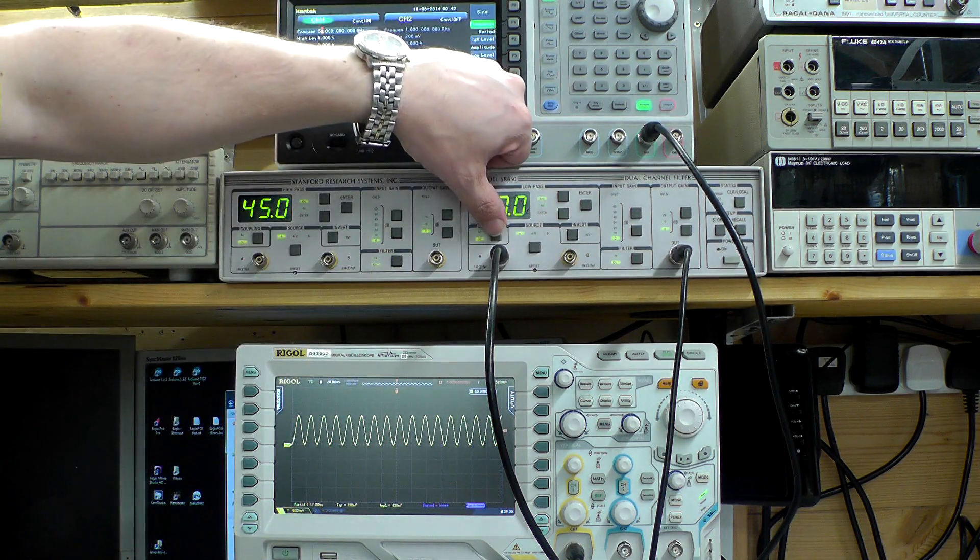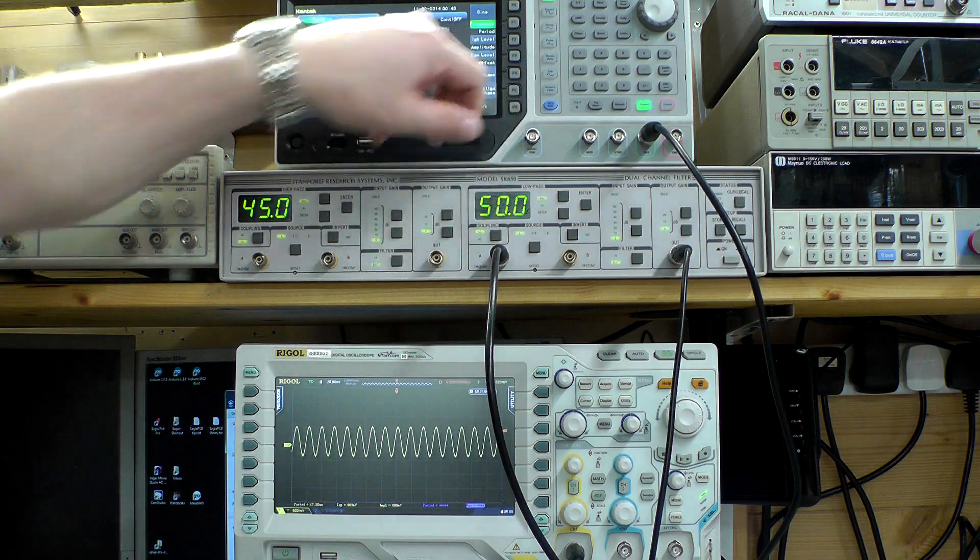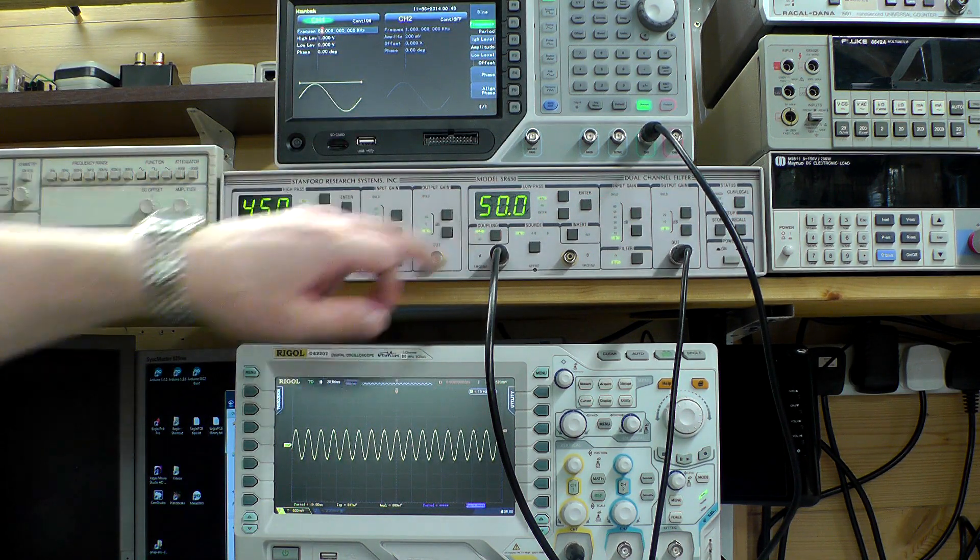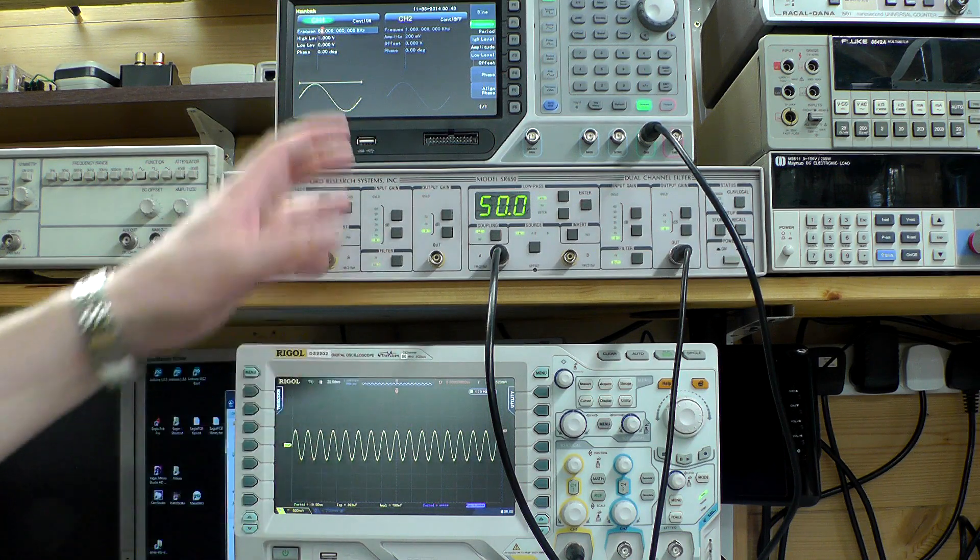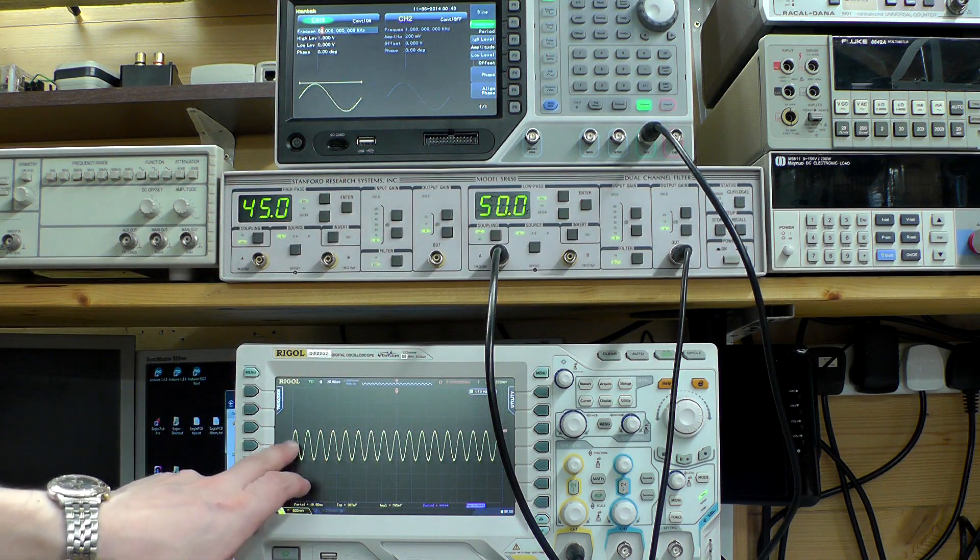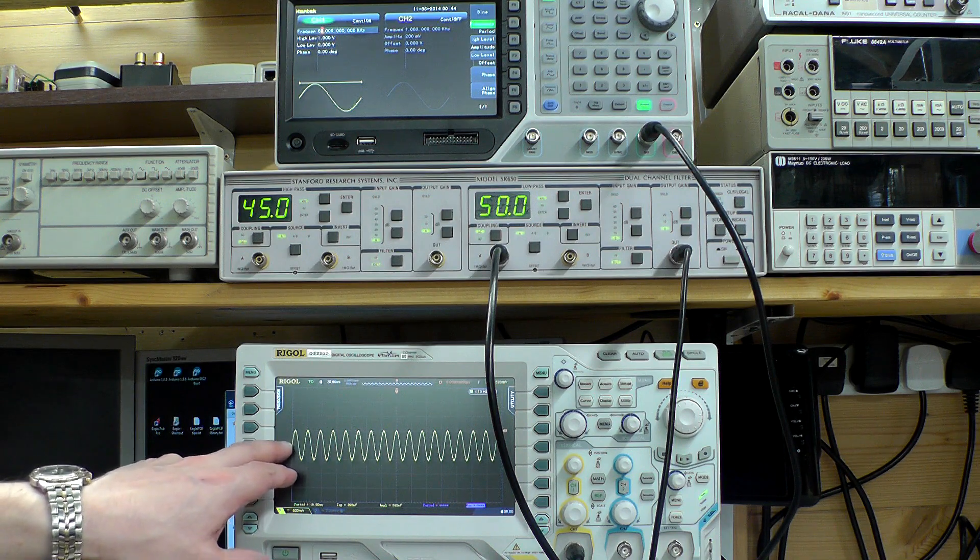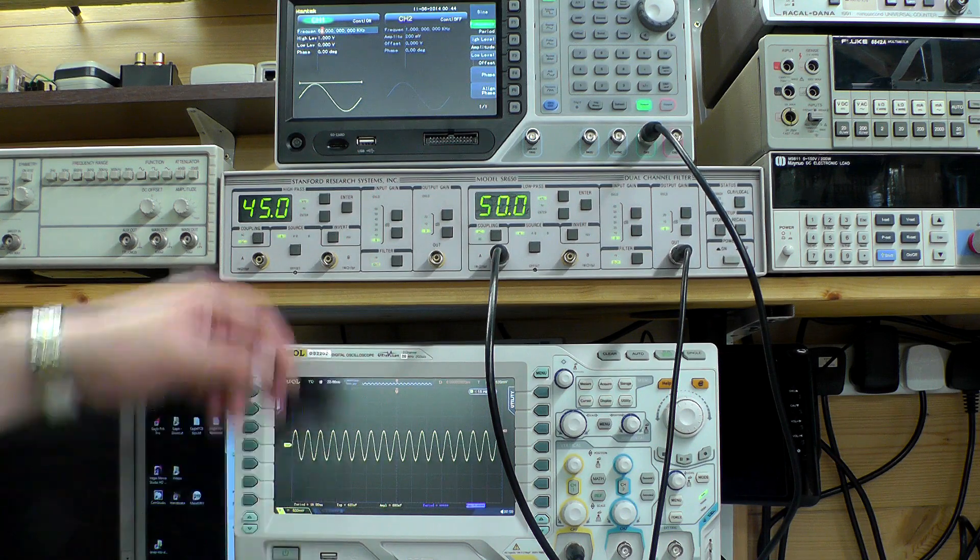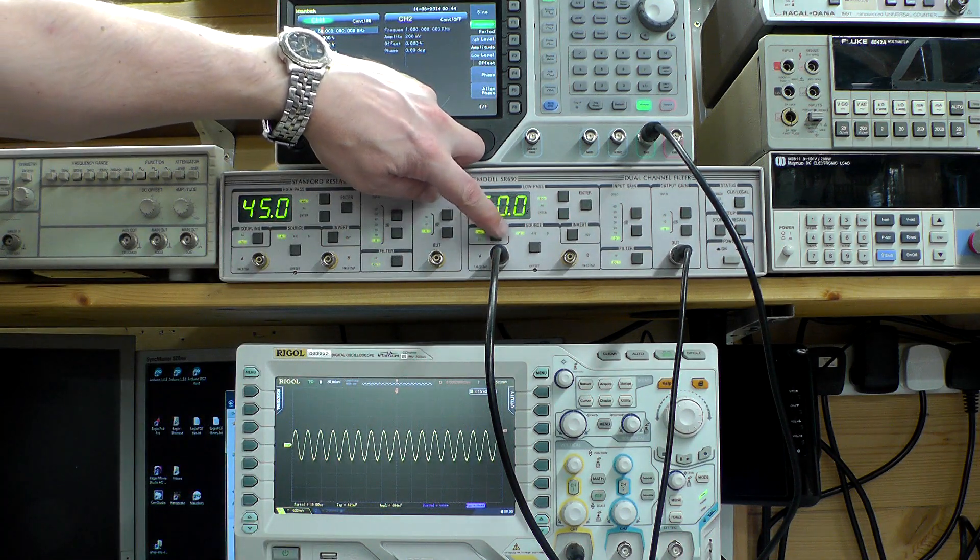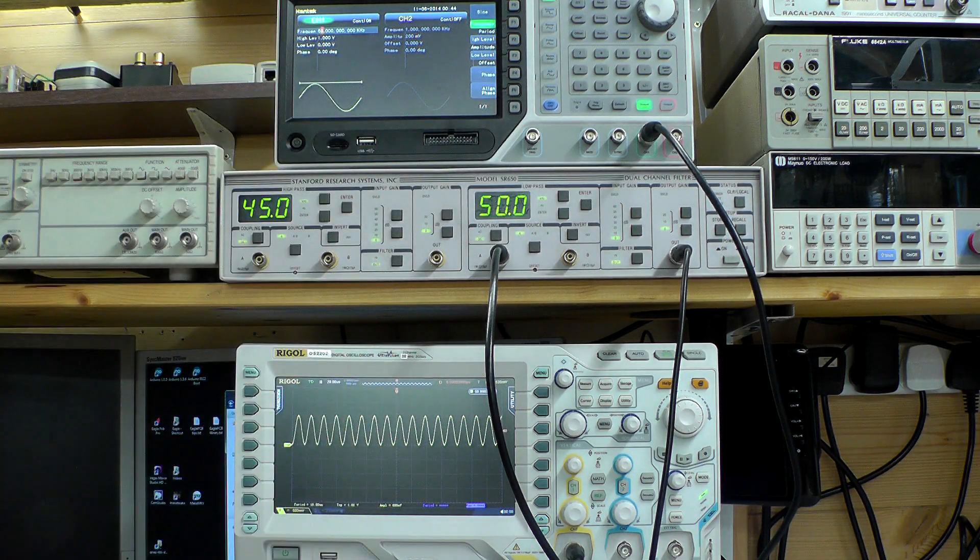If I hit the AC coupling mode on channel 2, you can see immediately I've got an AC coupled input, therefore the output is going to follow. Therefore you can see the waveform shifted down - I've got zero volts right along the middle there as it should be for a perfectly AC coupled input. So back on the DC mode again and it jumps back up.